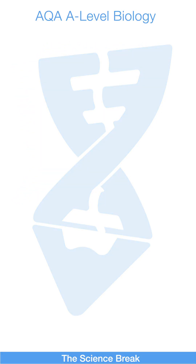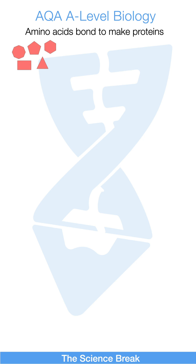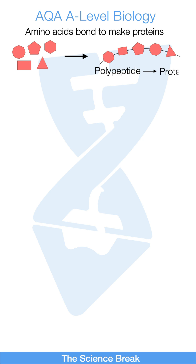This is for AQA A-level biology. Amino acids can bond to make proteins. Here are some amino acids — they can bond to make a polypeptide, and the polypeptide goes on to make a protein.